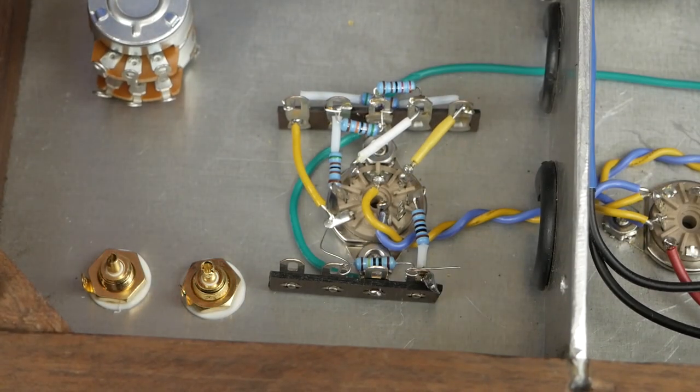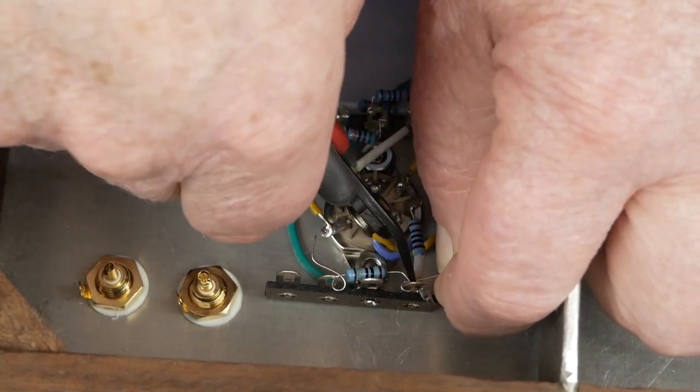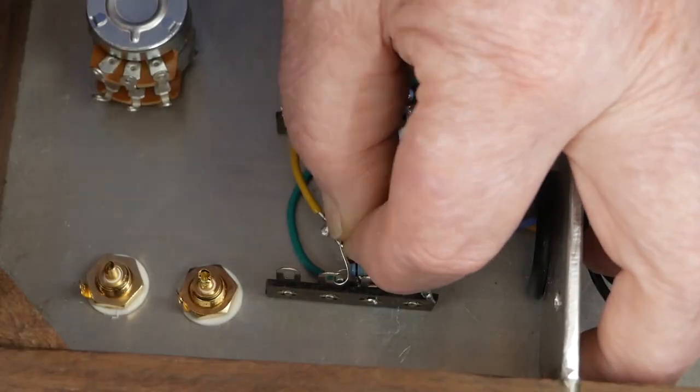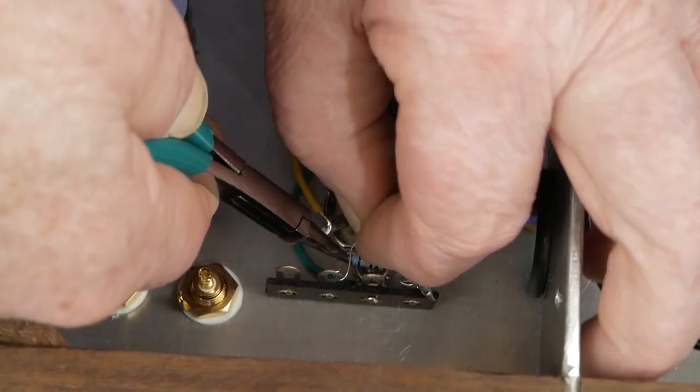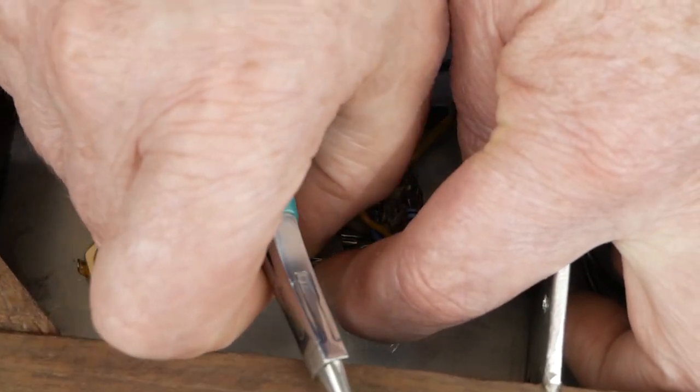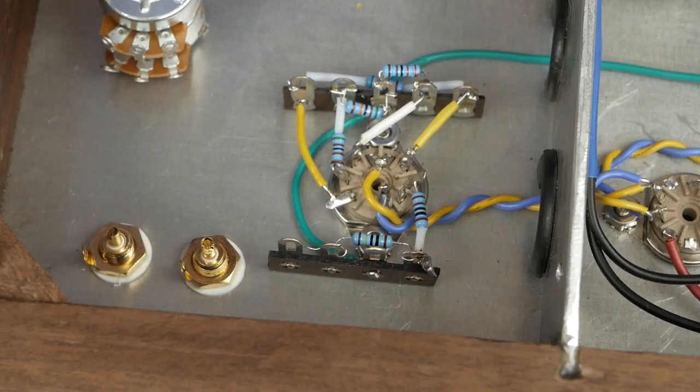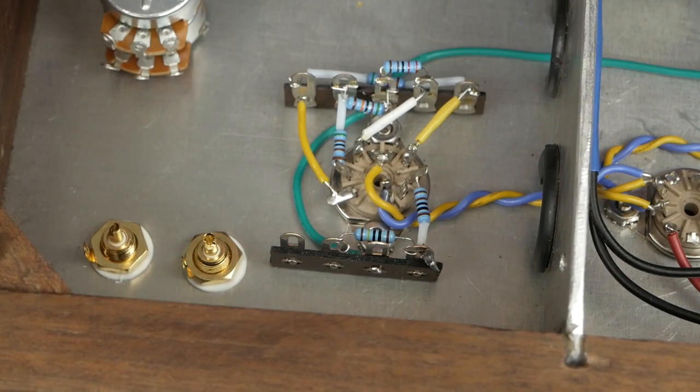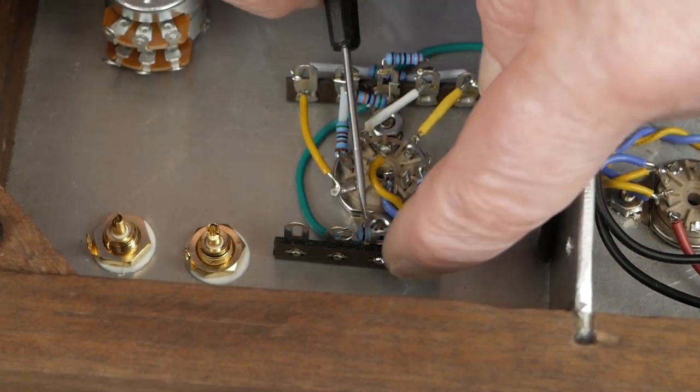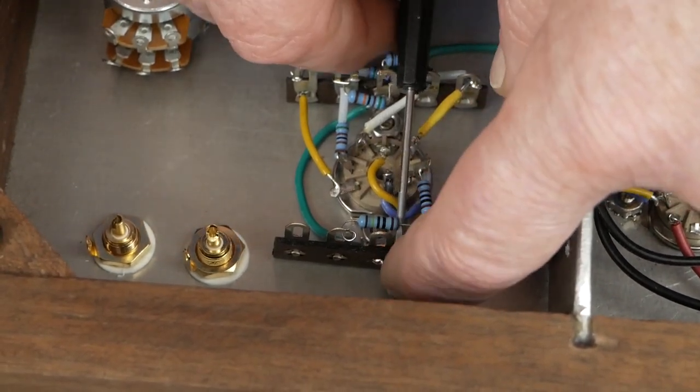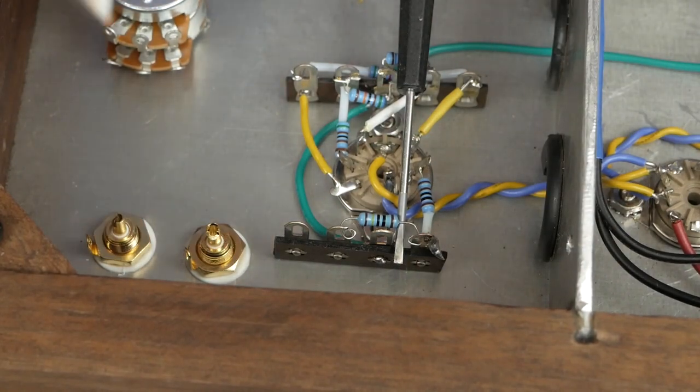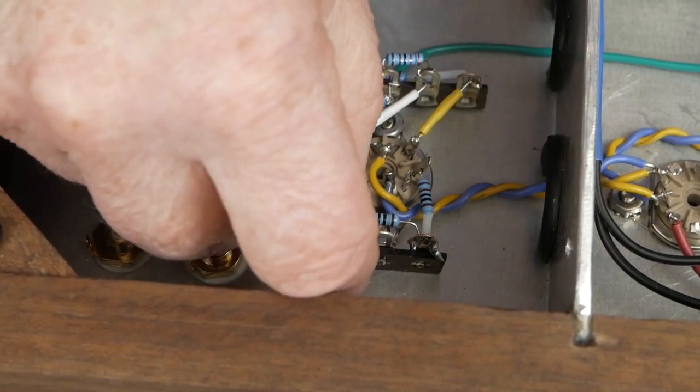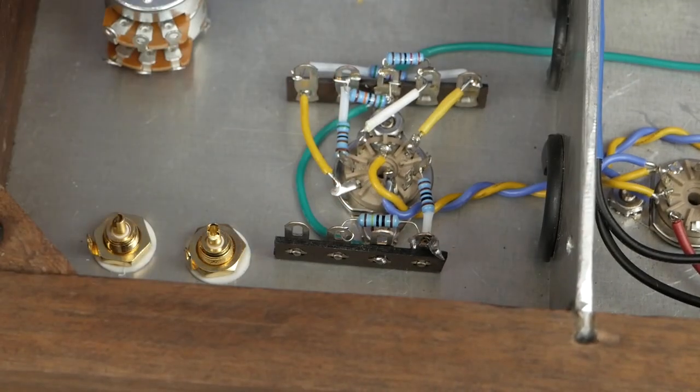Like I was saying earlier, these microscopic thin wires on these half watt resistors just aren't ideal for doing point-to-point wiring. I mean, obviously they're going to work fine. But I just find it's easier to do point-to-point wiring using resistors that have just a little bit thicker leads. There's that little resistor.